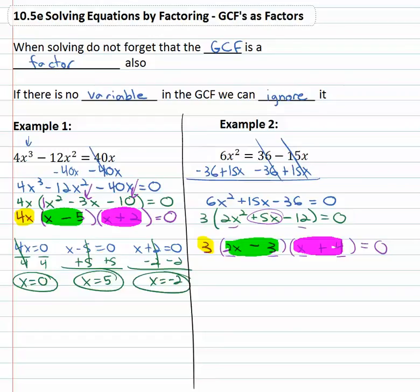Now because there is no variable in the GCF factor, it's going to be pretty useless to us, because we're just interested in finding x's. So we're not going to use that, but we will use the other factors, 2x - 3 = 0 and x + 4 = 0.